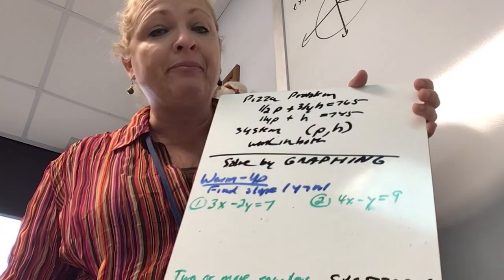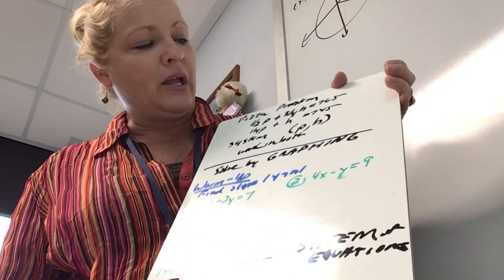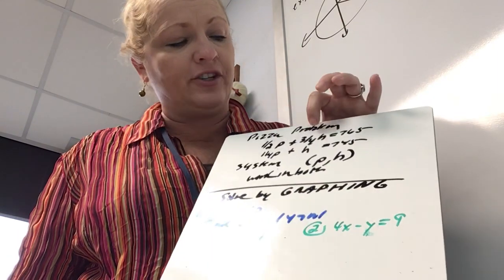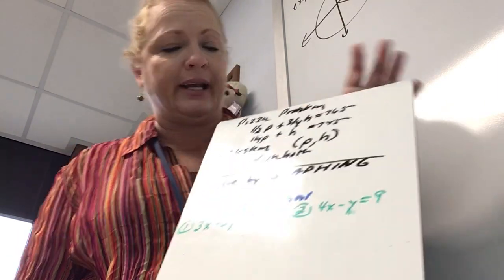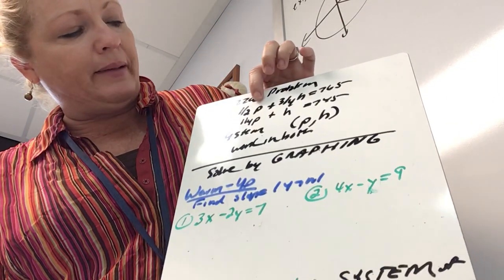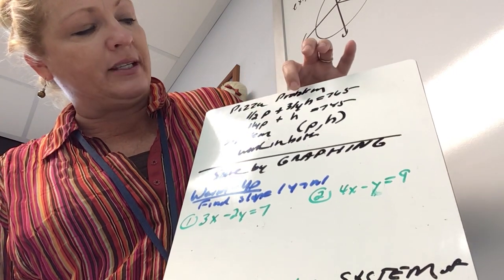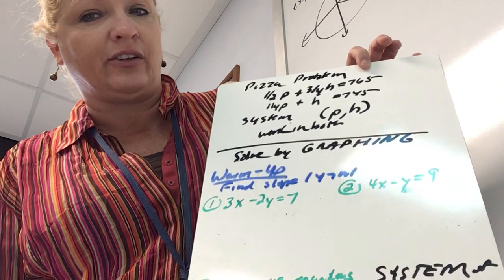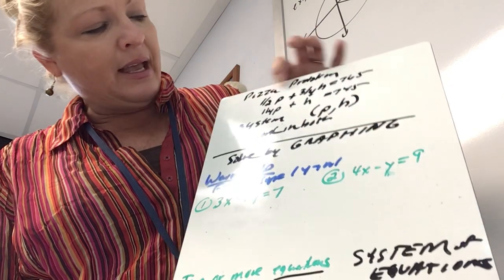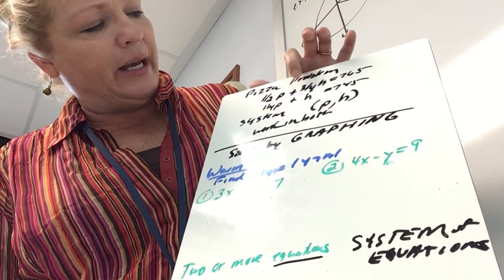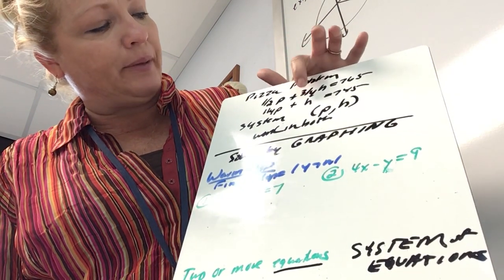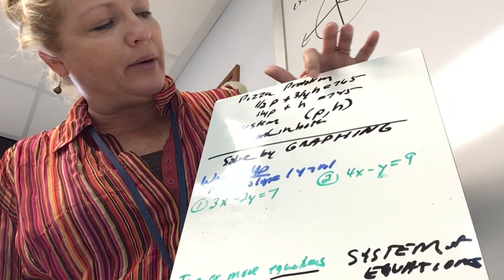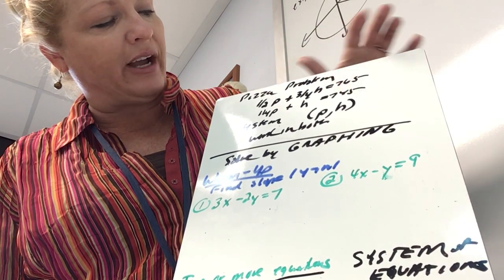I made P stand for pepperoni and H stand for ham and pineapple. The problem reads: a half a pepperoni pizza plus three-fourths of a ham and pineapple is 765 calories. And a fourth of a pepperoni plus an entire ham and pineapple equals 745 calories.